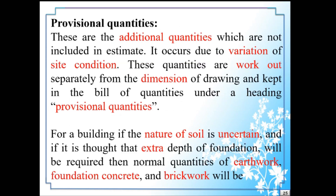Next one: Provisional Quantities. These are the additional quantities which are not included in the estimate. They occur due to variation of site conditions. These quantities are worked out separately from the dimensions of the drawing and kept in the bill of quantities under the heading provisional quantities. Due to variation in actual site conditions, whatever additional quantities arise are called provisional quantities, and they are worked out separately based on actual dimensions.